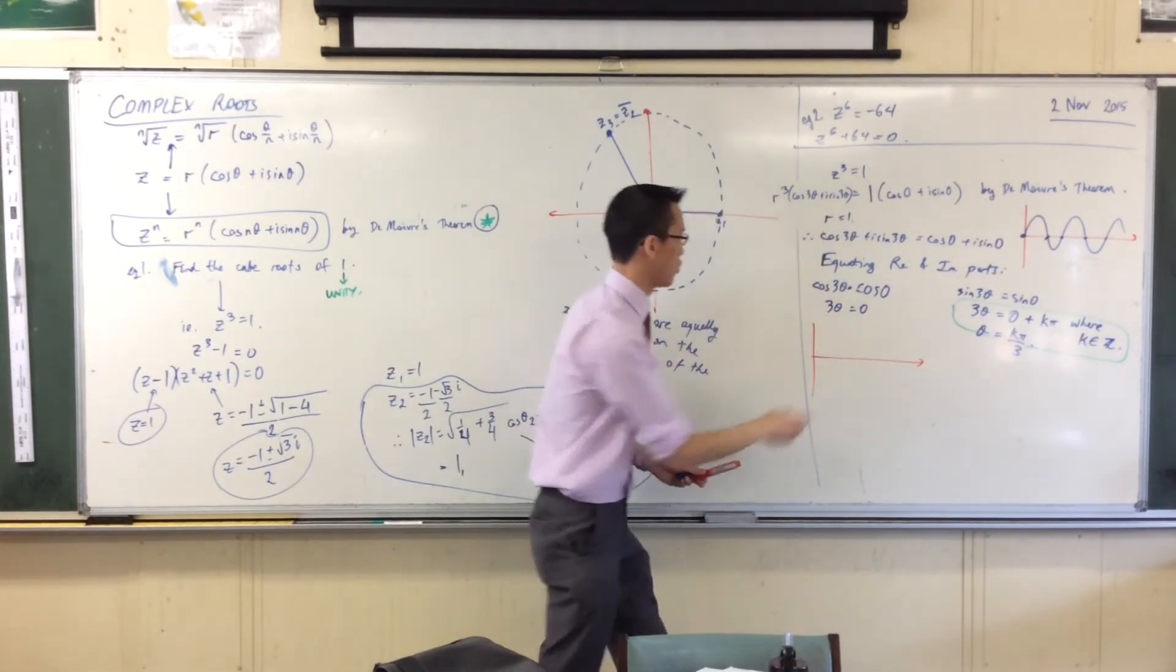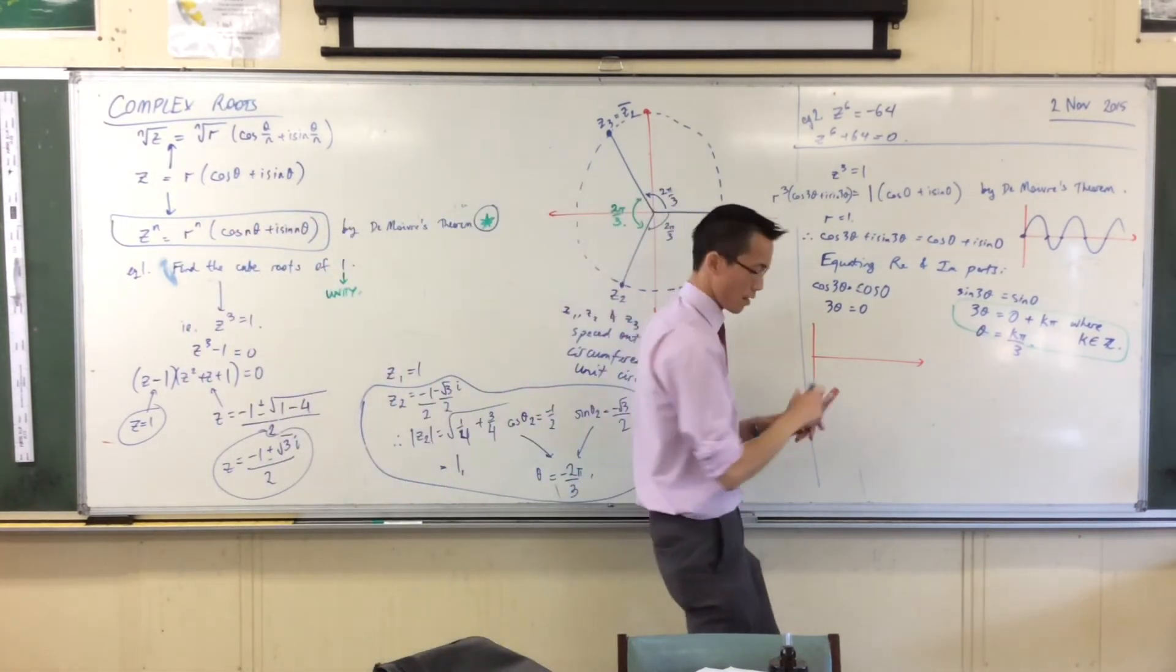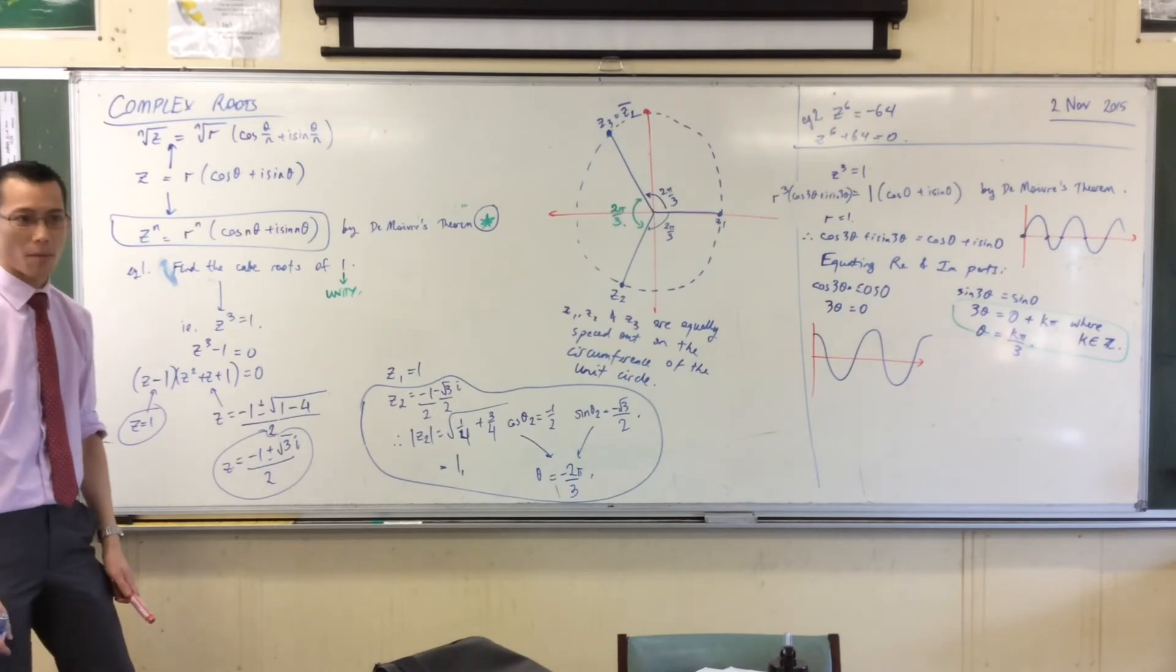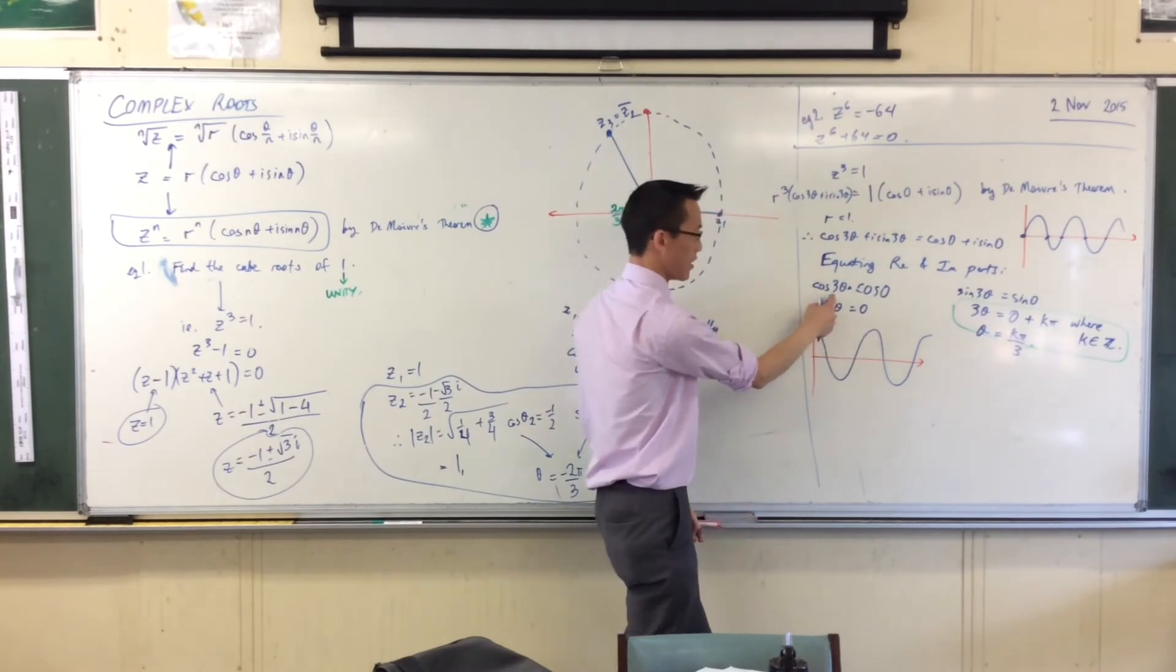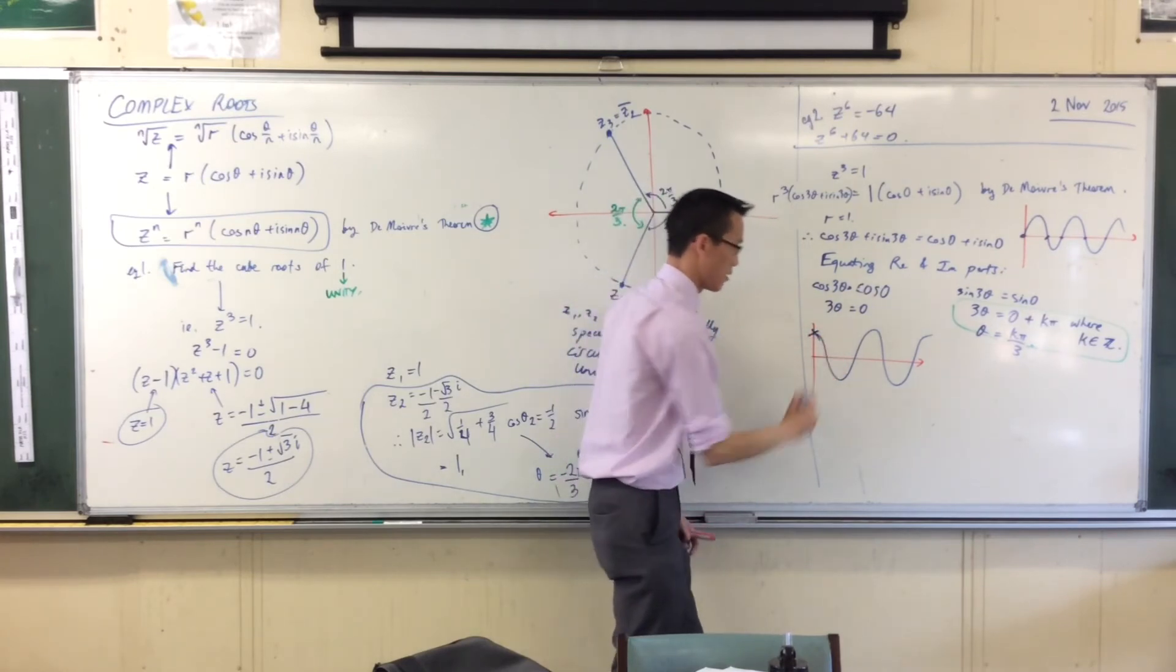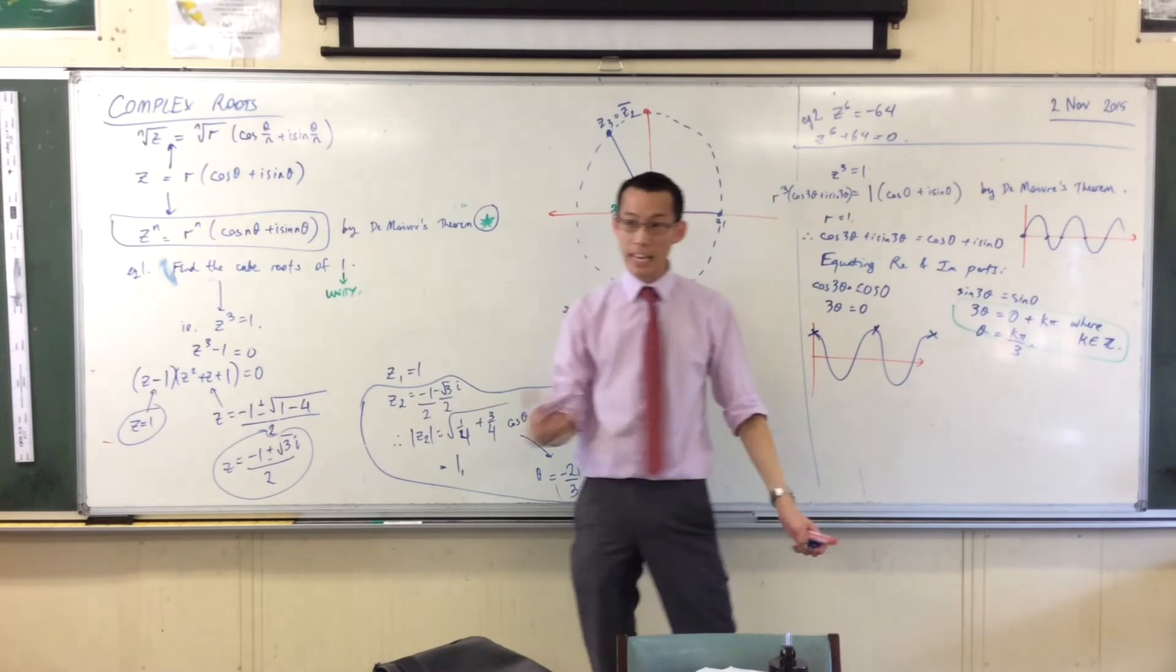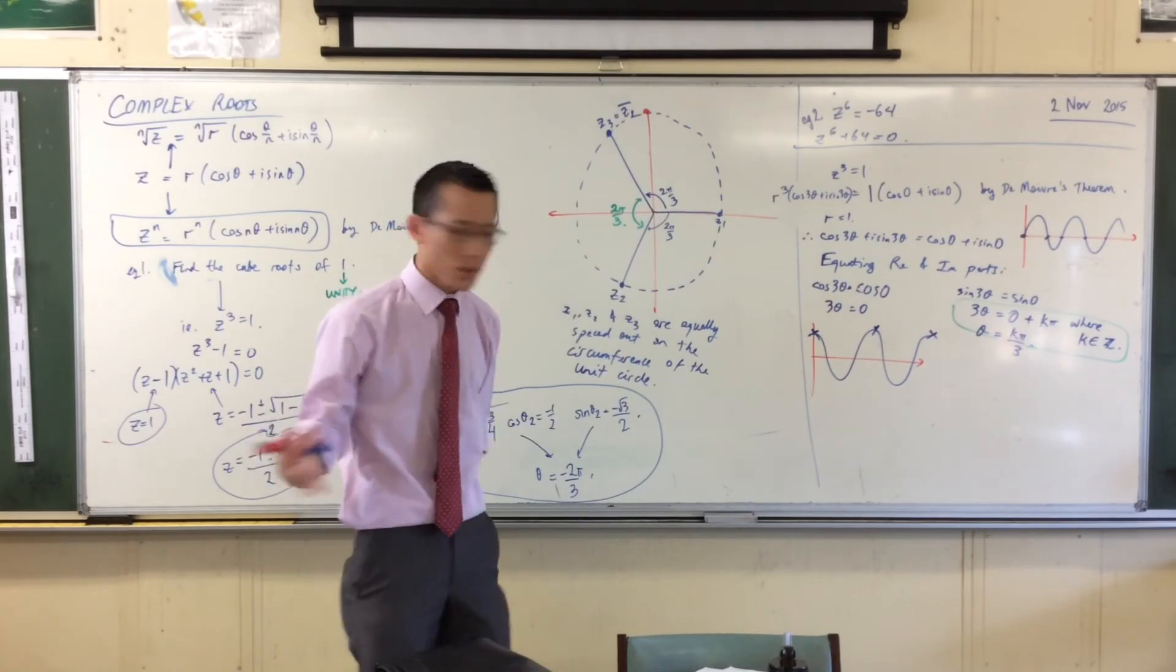What does the cosine graph look like? Where are my solutions? Don't forget 3θ = 0, so cos(3θ) = 1. Here's a solution, here's another solution, and I can keep going forever. How frequently do my solutions come up?